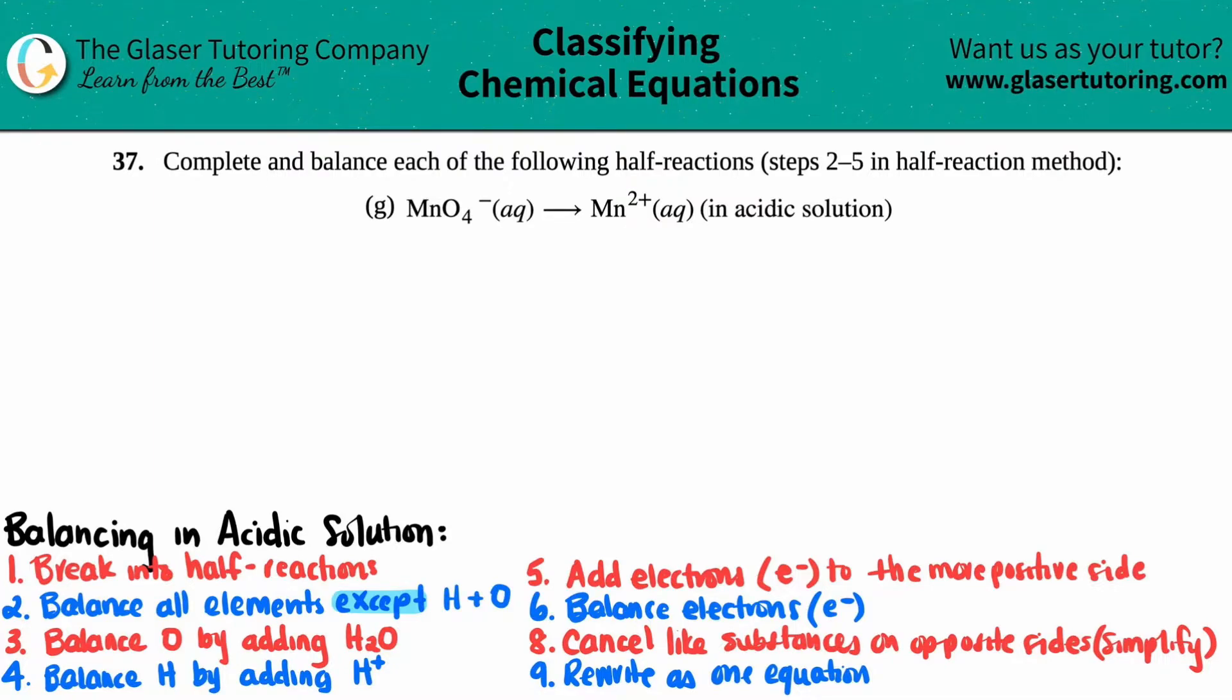Number 37, complete and balance each of the following half-reactions, which is steps two to five in the half-reaction method, and we have letter G here. So in this case, we have to balance MnO4 minus aqueous, and that will yield into just Mn2+ aqueous, and we have to balance this in acidic conditions or acidic solutions.